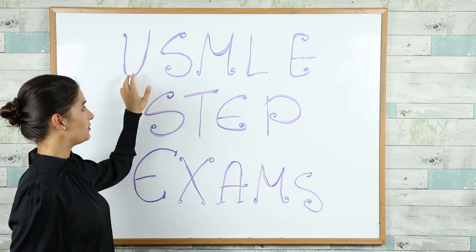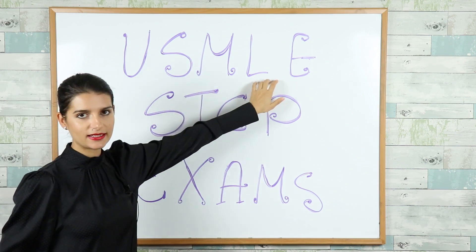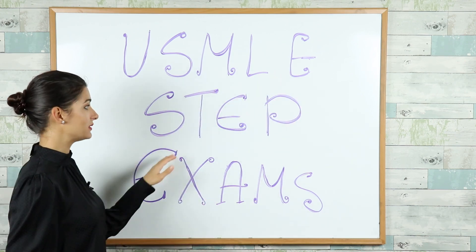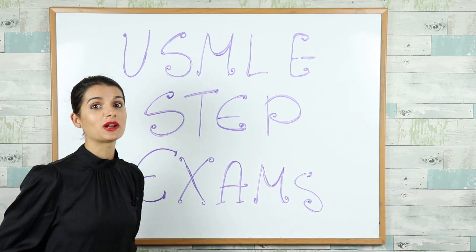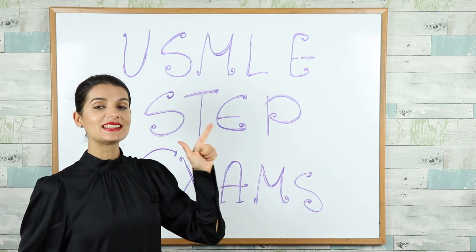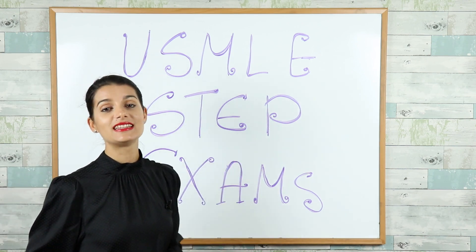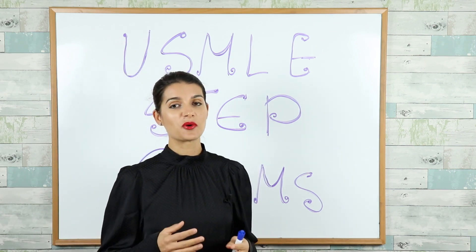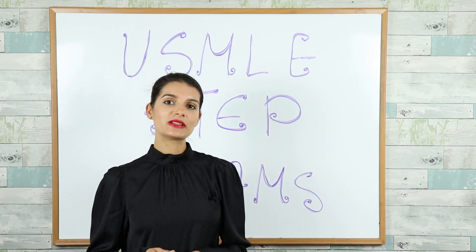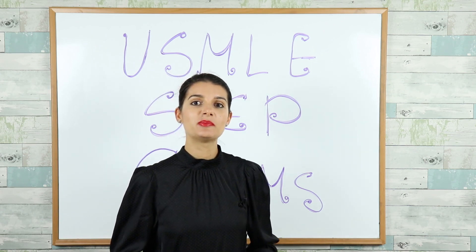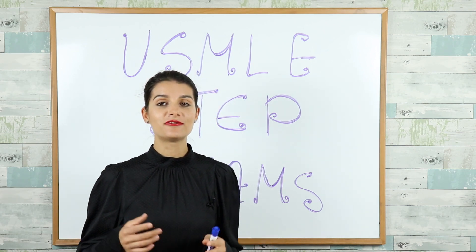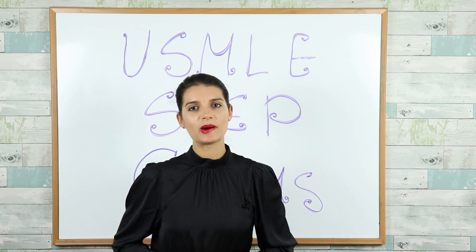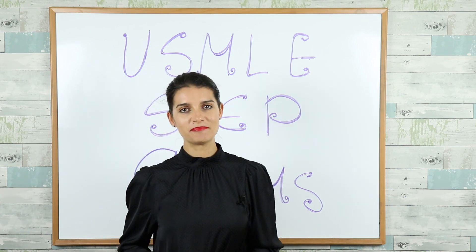USMLE stands for the United States Medical Licensing Examination and the tests themselves are called the step tests. Basically you have to climb three steps — Step 1, Step 2 and Step 3. These are the three tests that you have to pass and score very high on. Now technically there are three exams but in reality they're more like five because Step 2 and Step 3 have two parts, but we'll get to that in a bit.